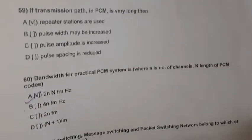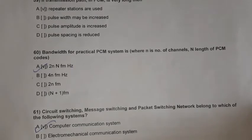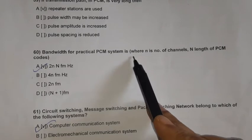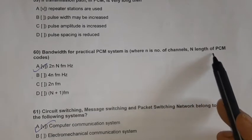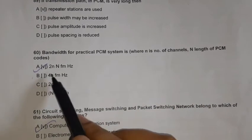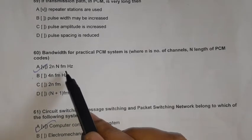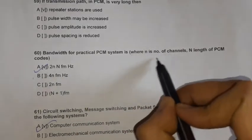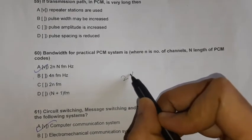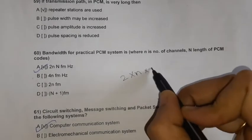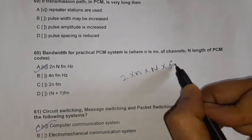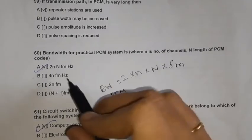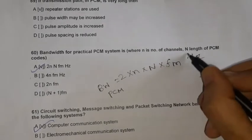Question 60: Bandwidth for a practical PCM system, where N is the number of channels and capital N is the length of PCM codes, is given by 2N × N × FM hertz, where FM is the modulating frequency. The unit is hertz.